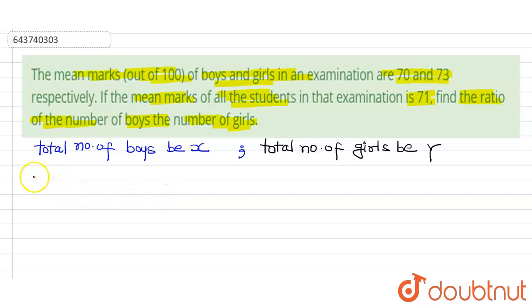And sum of marks of boys be a, and we again assume that sum of marks of girls be b.